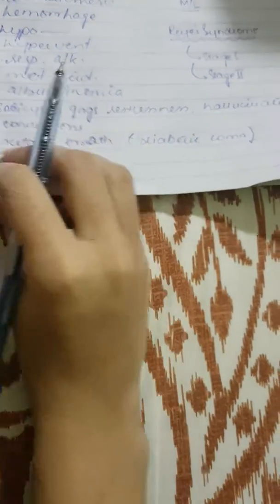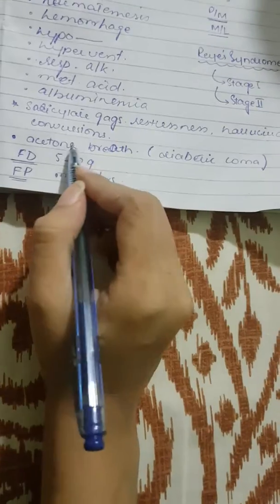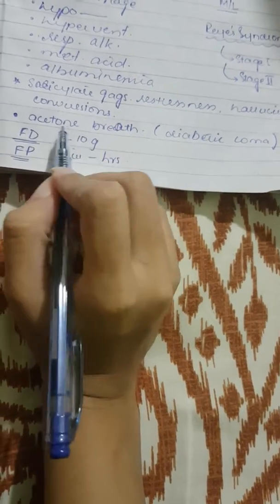We are known as salicylate gags, restlessness, hallucinations and convulsions. There may be acetone breath that can be confused with diabetic coma, so we need to differentiate these two conditions.